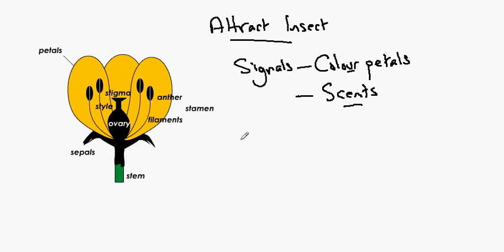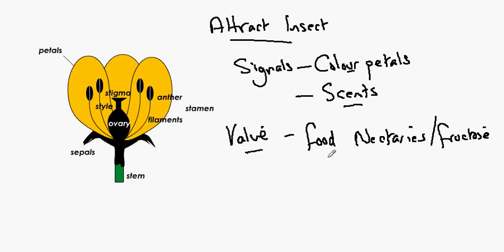Then there has to be a payoff of value to the insect for going to the flower. This is provided in the form of food, which are the nectarines producing a sugar called fructose. Many insects will actually use pollen itself as a source of protein.